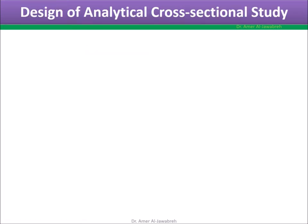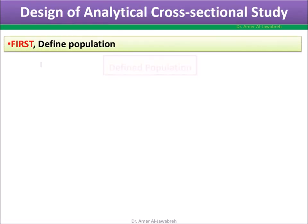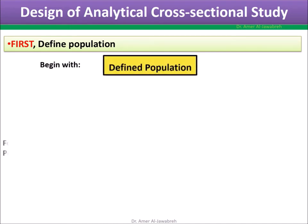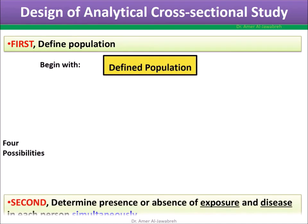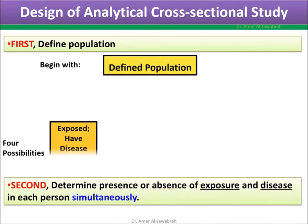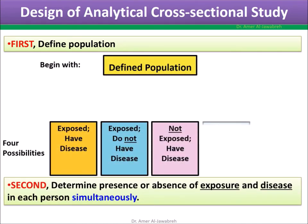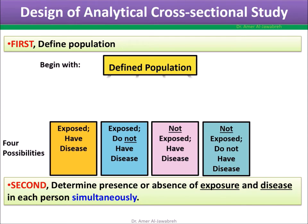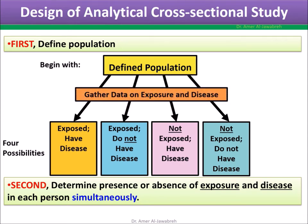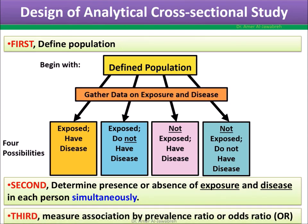Design of Analytical Cross-Sectional Study: 1) Define your population. 2) Determine presence or absence of exposure and disease in each person simultaneously. 3) Measure association by prevalence ratio or odds ratio.